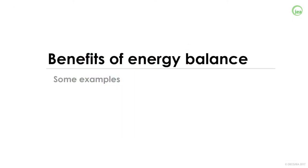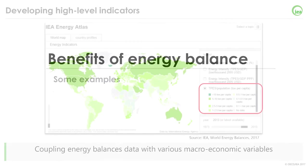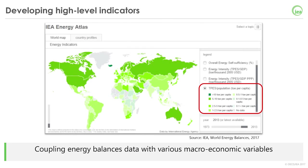Now that we have a clear understanding of energy balances, let's look at some examples of how we can use them to gain more insights on energy issues. Starting from energy balances data and totals, we can calculate a whole new range of high-level indicators by coupling this data with macroeconomic variables like GDP or population. Indicators such as self-sufficiency, energy intensity, or energy demand per capita can be calculated for each country, allowing comparisons and rankings between countries.